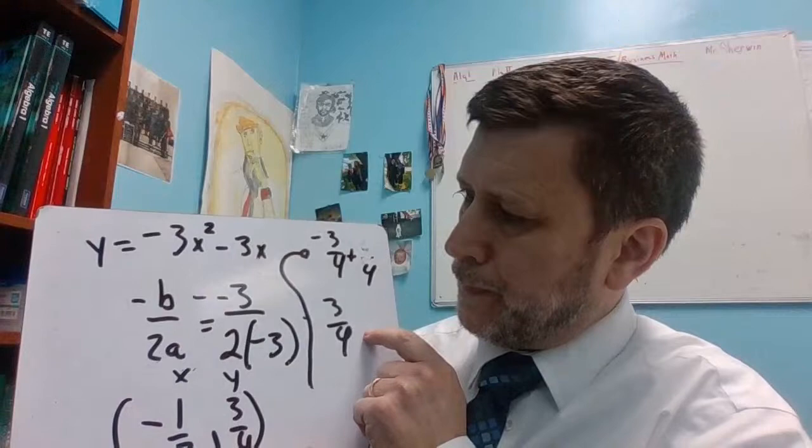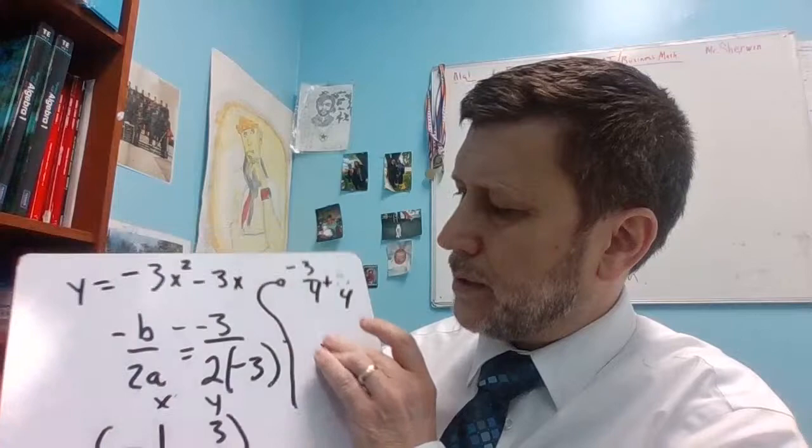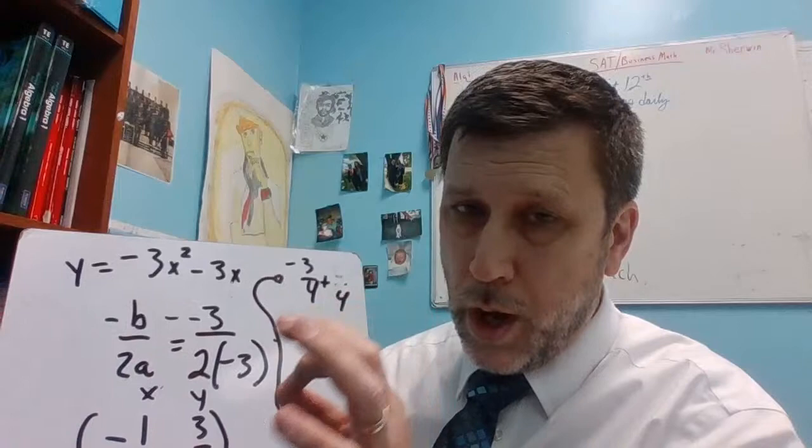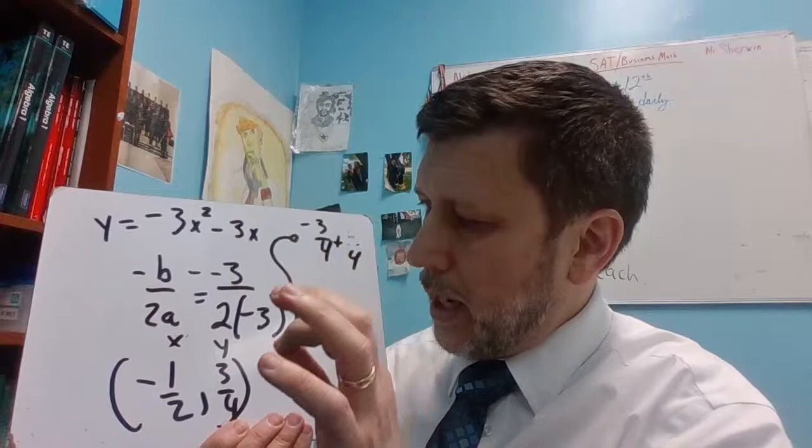The negative b is negative negative 3, so 3 over 6. Oh, that's not it. That's something else. Okay, so it's 3 over negative 6, which is negative 1 half.